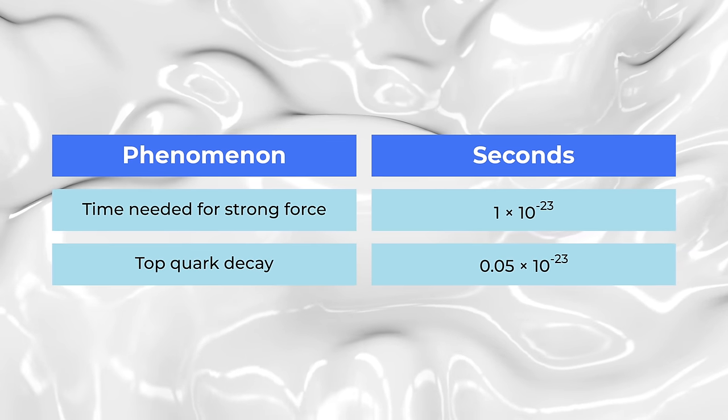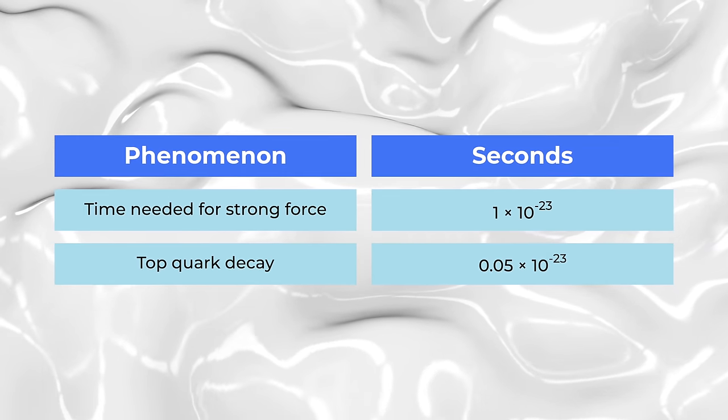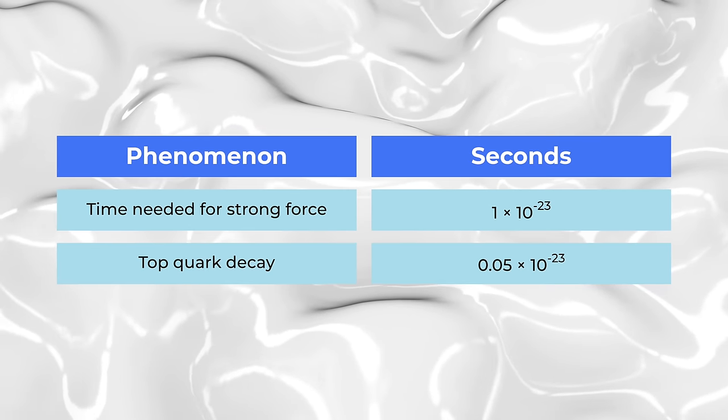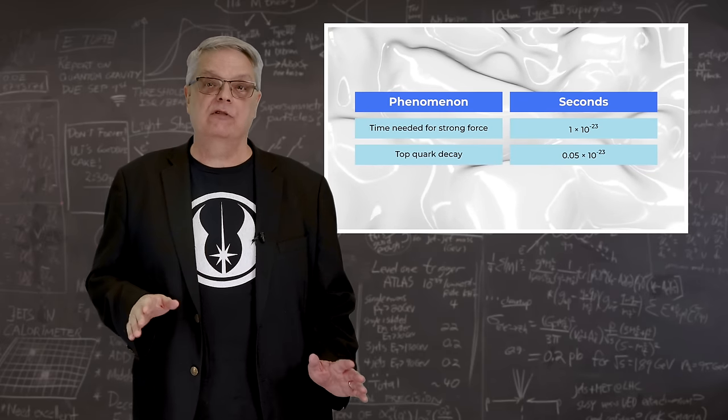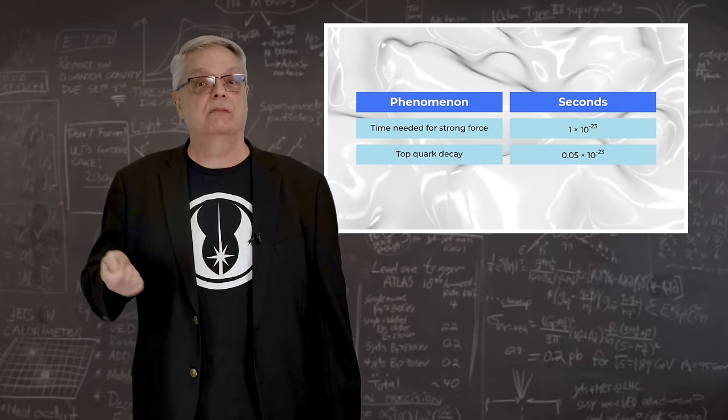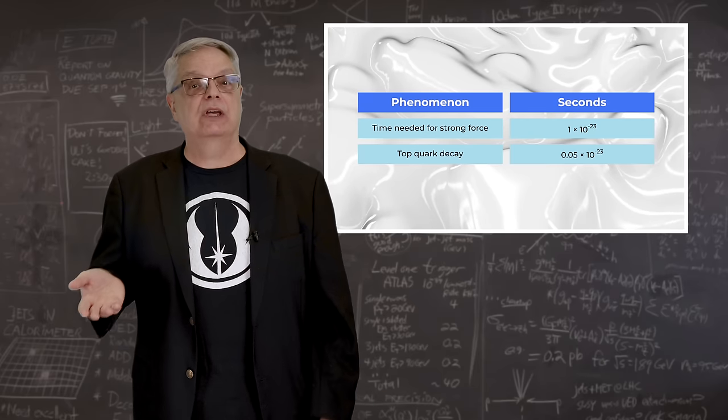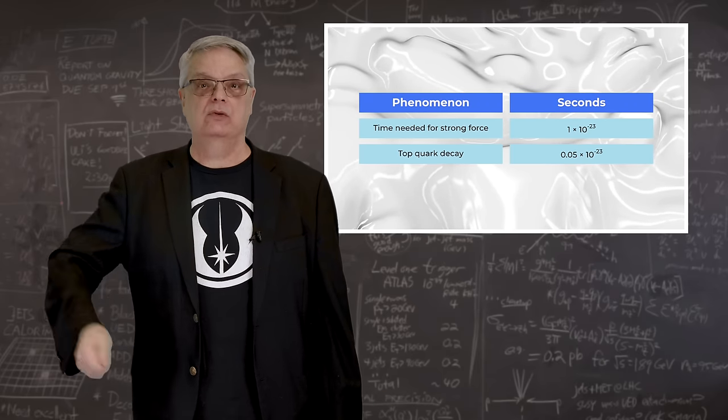As it happens, it takes about 10 to the minus 23 seconds for the strong force to have time to come into play. However, the top quark decays in the staggeringly short 5 times 10 to the minus 25 seconds, or about 5% the time it takes for the strong force to do something.